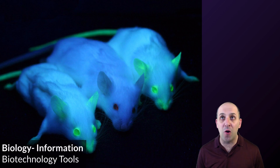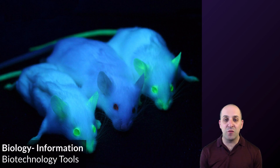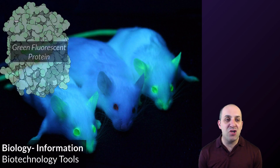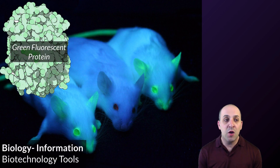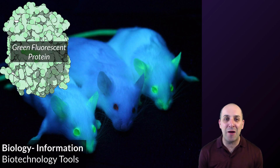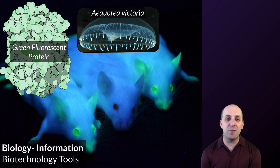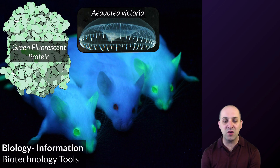If not, you're probably going to be lost pretty early on. I decided to start out this video with a picture of these mice who have been genetically engineered to glow green under UV light. This was accomplished by engineering the gene for green fluorescent protein into the genomes of these mice. Green fluorescent protein is not naturally found in the mouse genome — it was actually isolated from a species of jellyfish and then engineered into the genome of these mice.